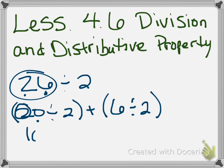It's really 20. So that equals 10, plus 6 divided by 2, which is 3, and then I finish with adding my 10 plus 3, and that gives me 13 as my final quotient.